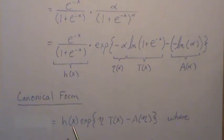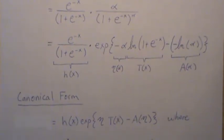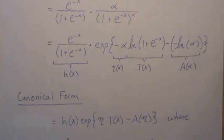So this is generically h of x. We'll call this eta. We'll call this T of x and this A of eta. And we want the negative in there for this theory to work. And this A of eta is called a log partition, if you want to delve into that a little further.